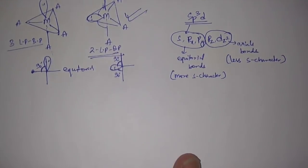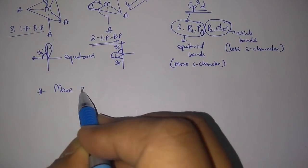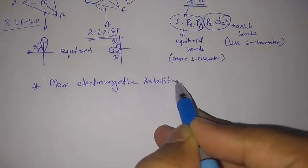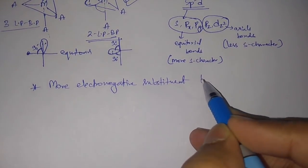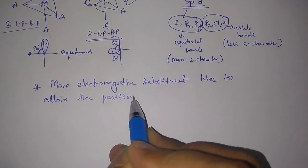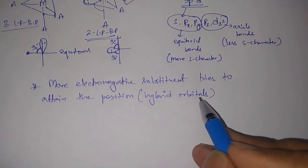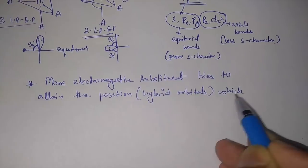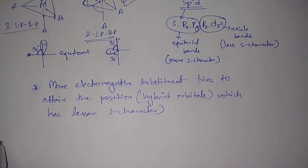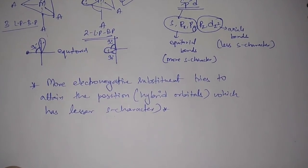Now let's talk about the Bent's Rule. The statement of Bent's Rule says: the more electronegative substituent tries to attain that position or hybrid orbital which has lesser s-character. This is very important — a more electronegative substituent will go to the position where s-character is less.